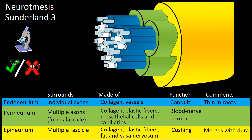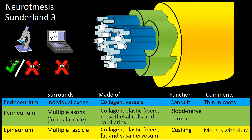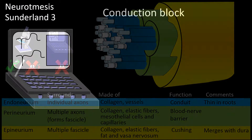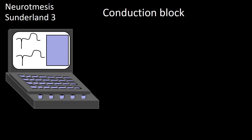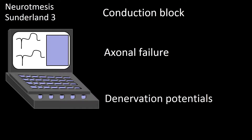In conjunction with these light microscopy findings, electrodiagnostic abnormalities are present, and they depend on the age of the lesion in relation to the time of the study. These abnormalities consist of conduction block in the first few days after the lesion, and later axonal failure and denervation potentials.